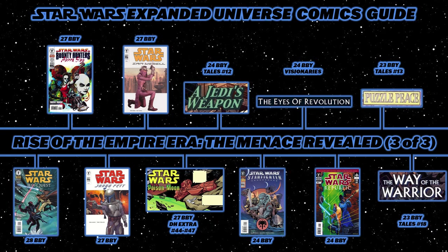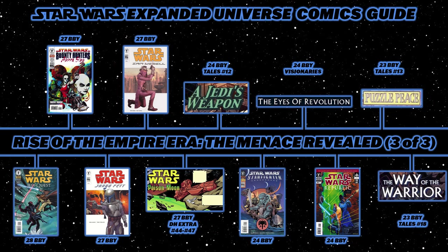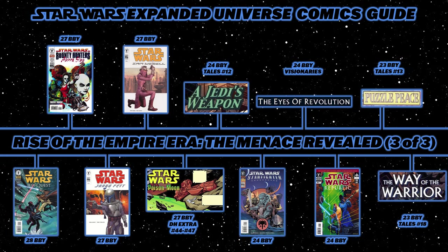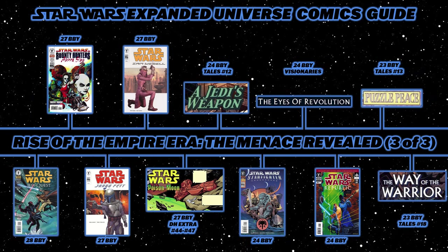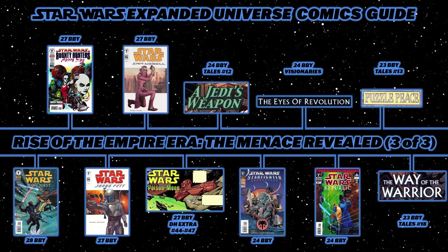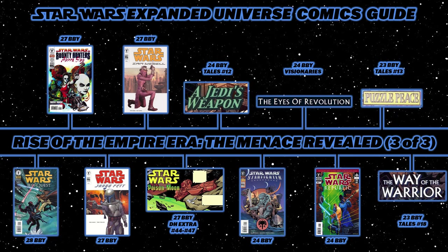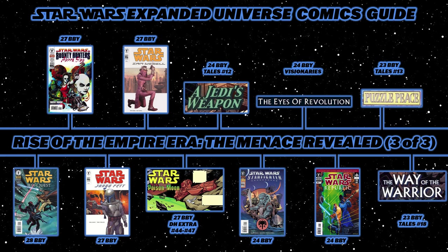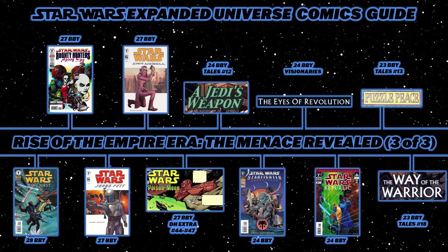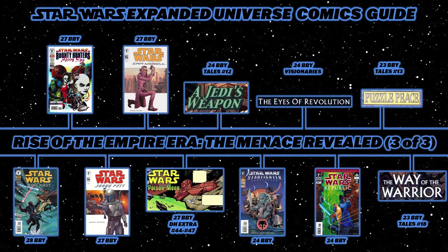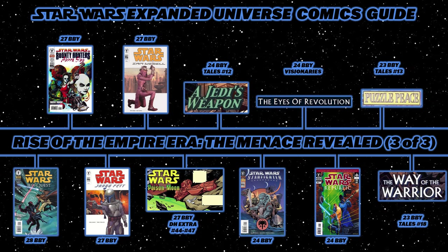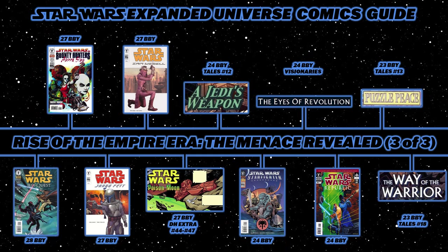Moving on, read Star Wars: Jedi Quest, an adaptation of the junior novel Jedi Quest: Path to Truth, following young Anakin Skywalker as he overcomes his fears — including the memory of Darth Maul. Then the first Bounty Hunters one-shot: Aurra Sing, followed by the two one-shots Star Wars: Jango Fett and Star Wars: Zam Wesell.